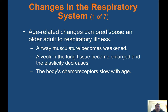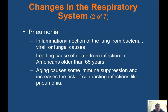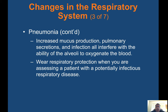Changes in the respiratory system: age-related changes can predispose an older adult to respiratory illness. Airway musculature becomes weakened. Alveoli and lung tissue become enlarged and elasticity decreases. The body's chemoreceptors slow with age. Pneumonia is an inflammation and infection of the lung from bacterial, viral, or fungal causes. It is the leading cause of death from infection in Americans older than 65 years. Aging causes immune suppression, increasing risk of contracting infections like pneumonia. Wear respiratory protection when assessing a patient with a potentially infectious respiratory disease.